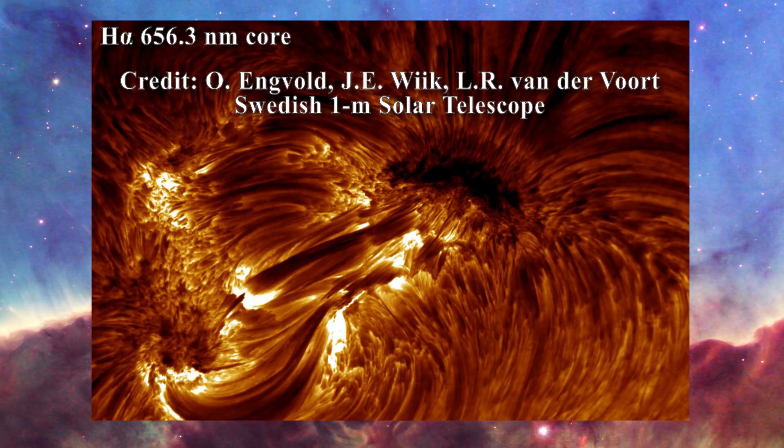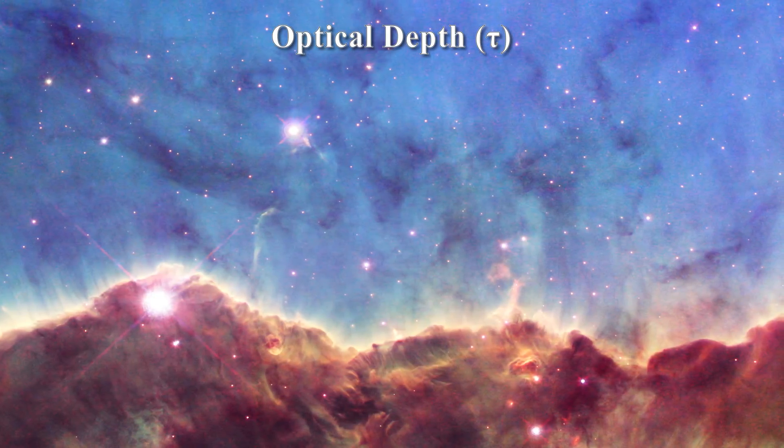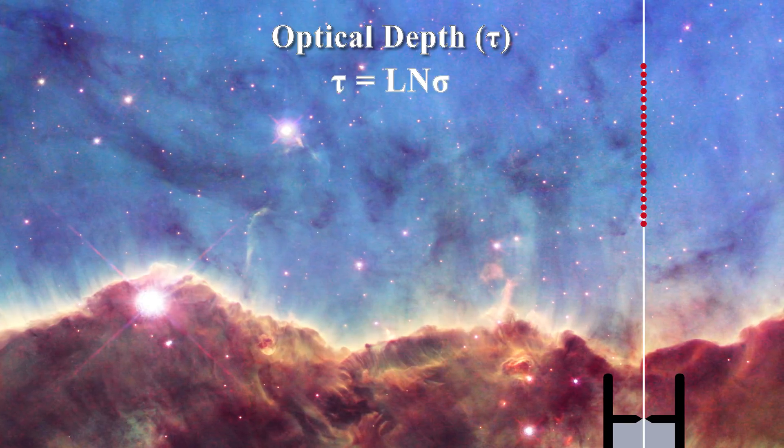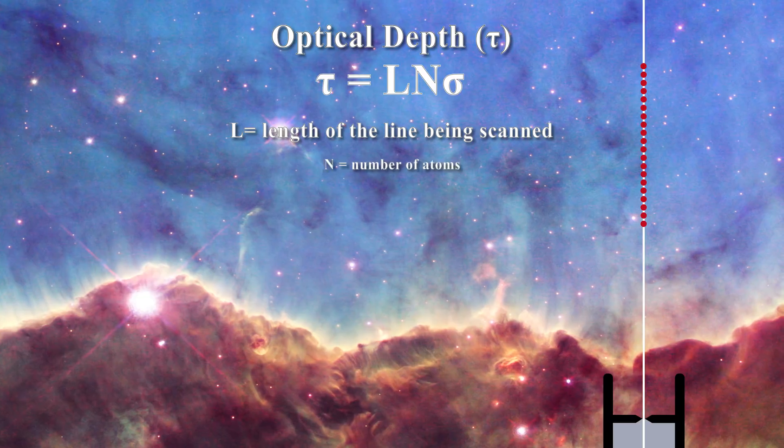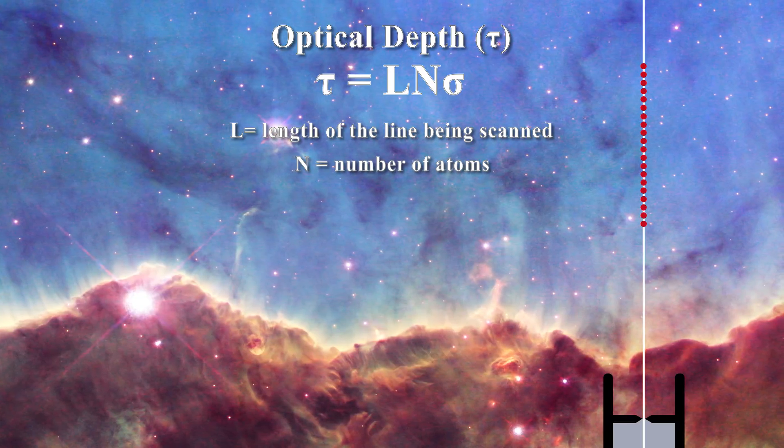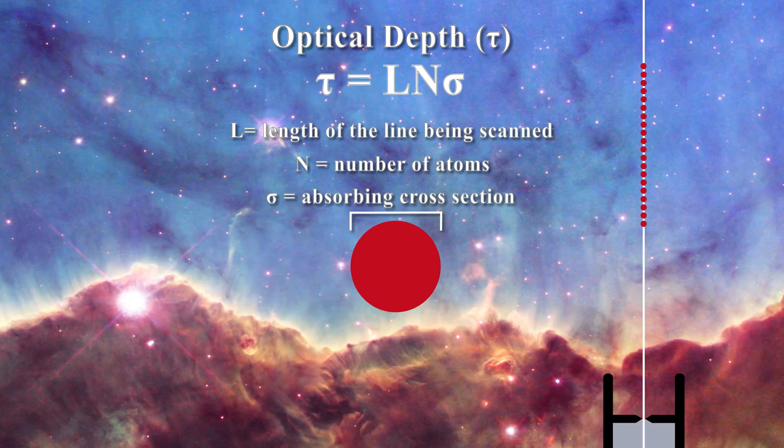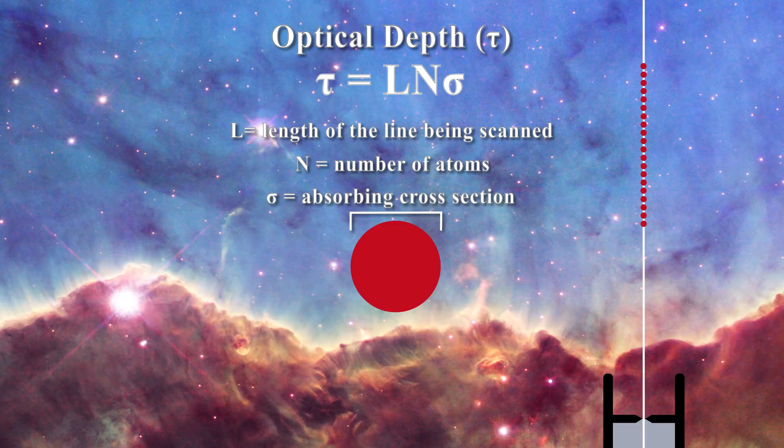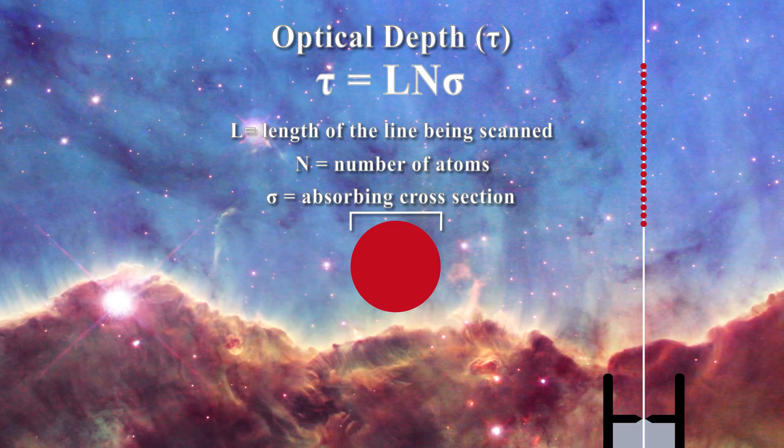All of this is related to what is known as optical depth of a line. Imagine if one scans along a line of atoms. Then the optical depth, tau, is given by the length of the line being scanned, L, the number of atoms in that line, N, and the absorbing cross-section for those atoms, sigma. The absorbing cross-section for atoms can vary substantially with the wavelength and the nature of the atom. As a result, optical depth in astrophysics varies with wavelength. Usually, it is always expressed with a small subscript nu, reflecting that it is frequency dependent.